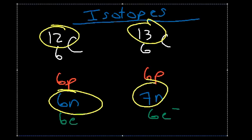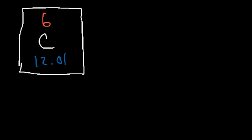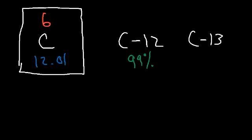Looking at carbon on the periodic table, you'll see the atomic number 6 and below it 12.01 — not exactly 12. This number is called the average atomic mass. It's an average because carbon has multiple isotopes: the predominant one is carbon-12, but there's also carbon-13 and a tiny amount of carbon-14. Approximately 99% of carbon atoms in a sample are carbon-12, and about 1% is carbon-13.